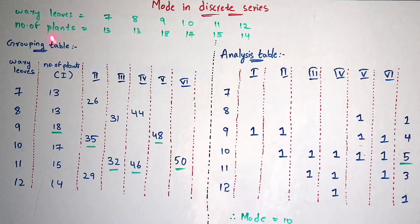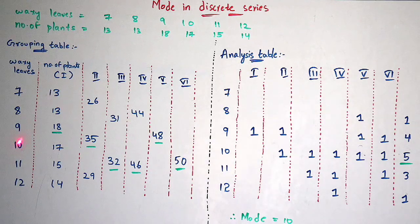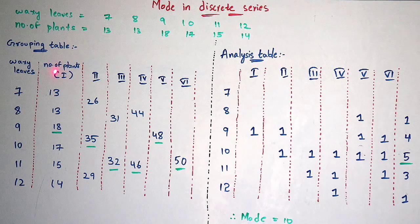Coming to this problem: waxy leaves data is given, where they vary from 1 to 11 and the number of plants are given below. The grouping table consists of 6 columns normally. The first column will be the number of plants (frequencies), and the remaining columns are 2, 3, 4, 5, and 6.